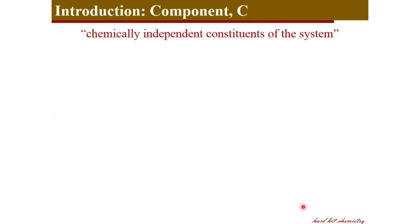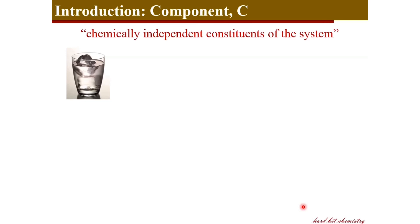Now we move on to the definition of component. A component is a chemically independent constituent of a system. In this example we have three phases — a liquid phase, a solid phase, and a vapor phase above the liquid, since every liquid undergoes some degree of vaporization. But all three phases constitute the same chemical entity, water (H₂O). That is why this system has only one component — all three phases constitute the single component, water.